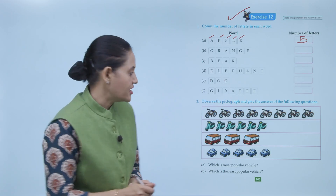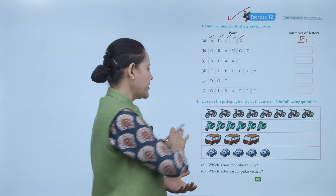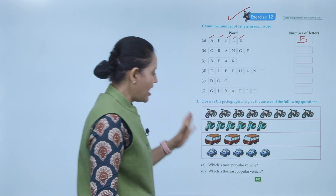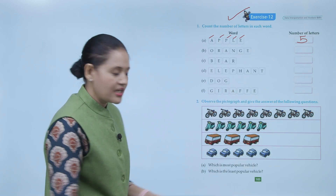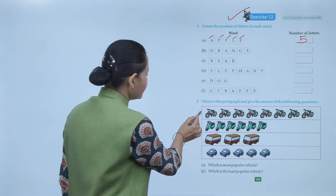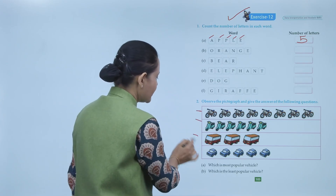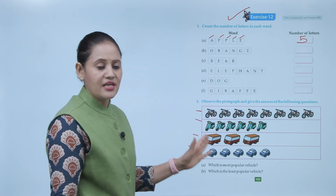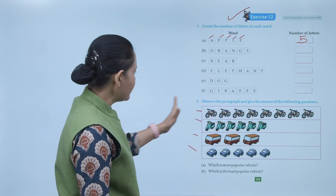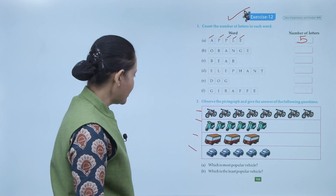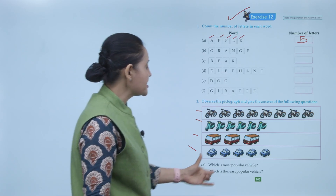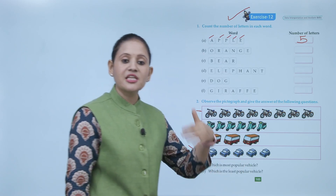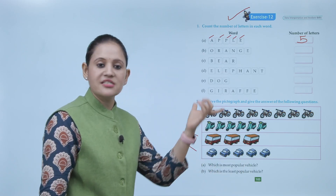A pictograph is given. Aapko alag alag vehicles dikhaye gaye hain — cycle, scooter, buses, and cars — different vehicles are shown here. Which is the most popular vehicle? Sabse zyada popular vehicle woh hoga jiska number zyada hoga.